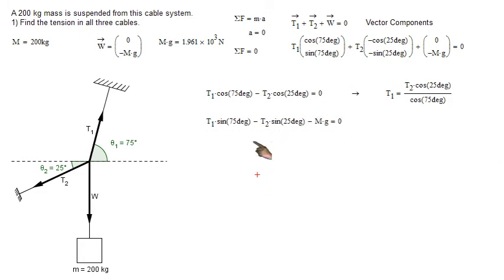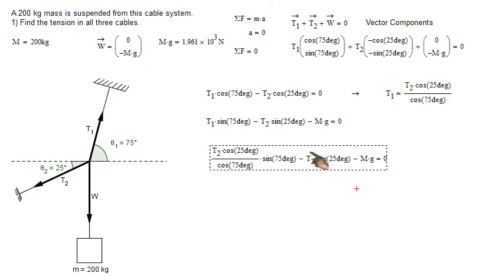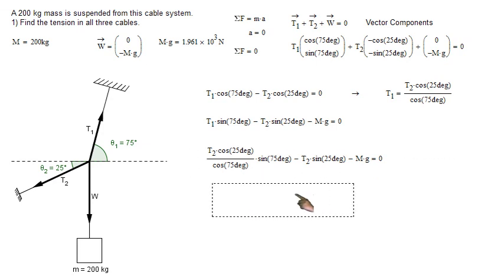So, when we plug this T1 into here, it looks like this. T2 cosine 25 over cosine 75 sine 75 minus T2 sine 25 minus mg equals zero. Solving for T2, because T2 is the only unknown in this equation here, looks like this.